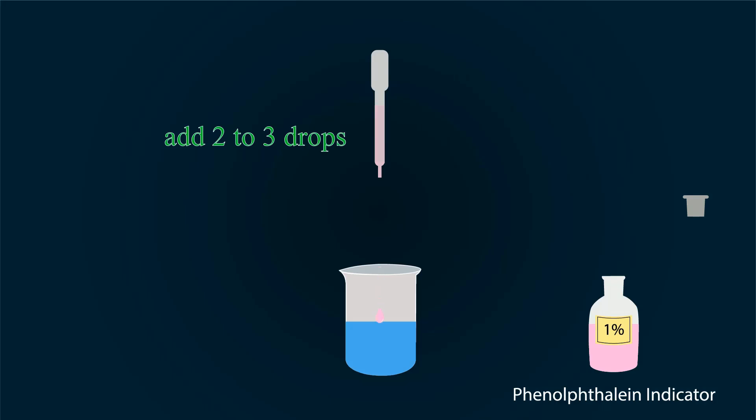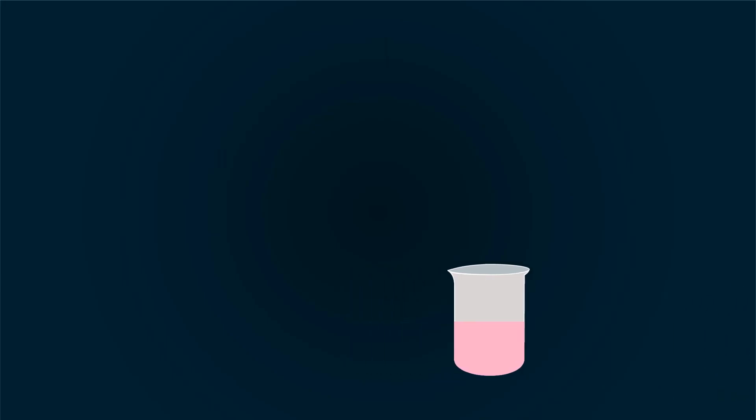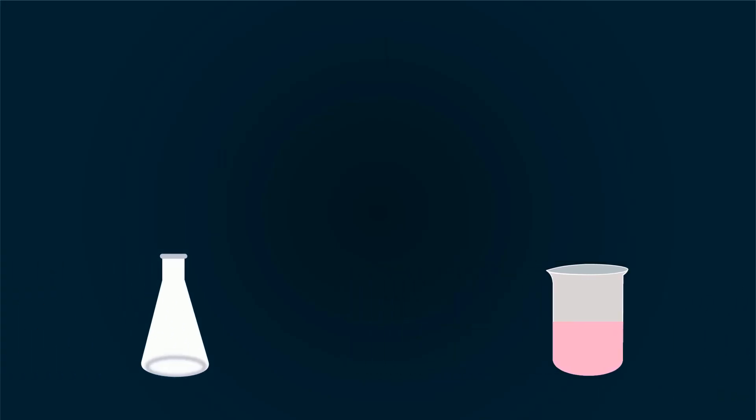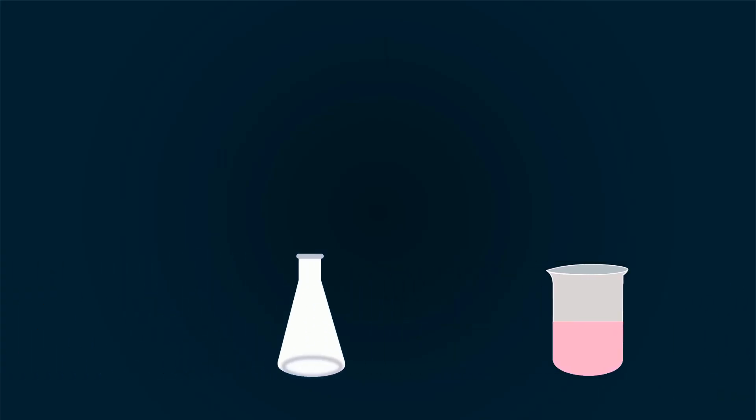The water color will be changed into pink. If the color remains the same, that means alkalinity is zero. Our water turned into pink. Now pour this into the conical flask.